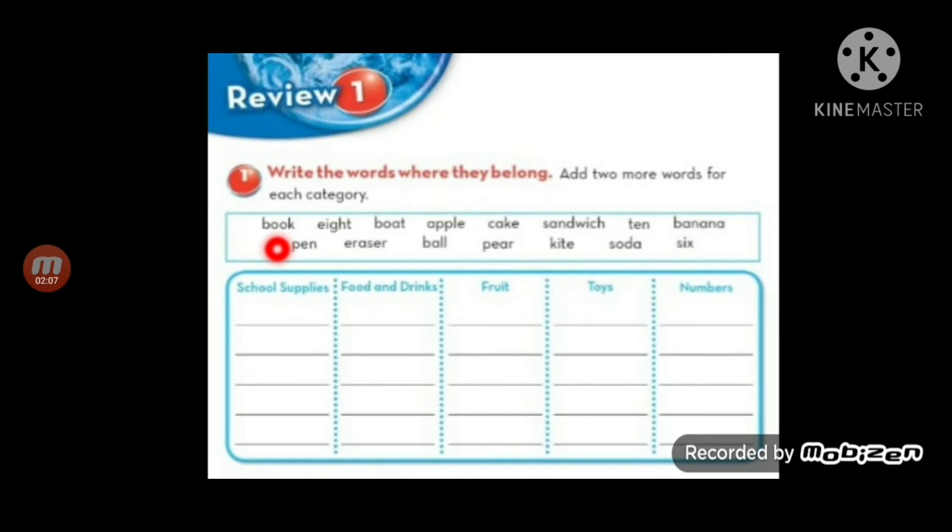Let me read them first. Book, B-O-O-K, meaning book. Eight, the number eight. The G and H are silent, we say the E, I, and T. Boat, B-O-A-T, meaning boat. Apple, A-P-P-L-E. The P, we don't stress it at first, and the E is silent because it comes late. Apple means apple.